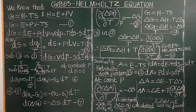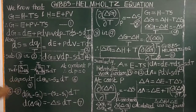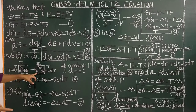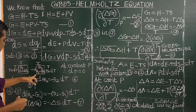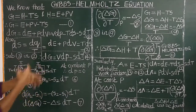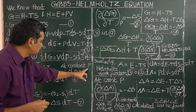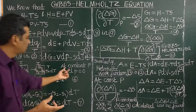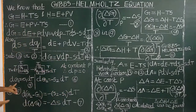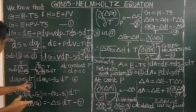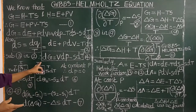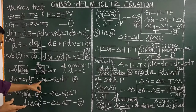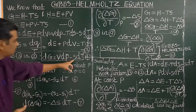On raising the temperature by dT, the free energy changes. The free energy in the initial state changes to G1 plus dG1. And the free energy change in the final state is equal to G2 plus dG2. At constant pressure, dP equals 0. The free energy change dG1 for the initial state is equal to minus S1 dT, and for the final state dG2 equals minus S2 dT.